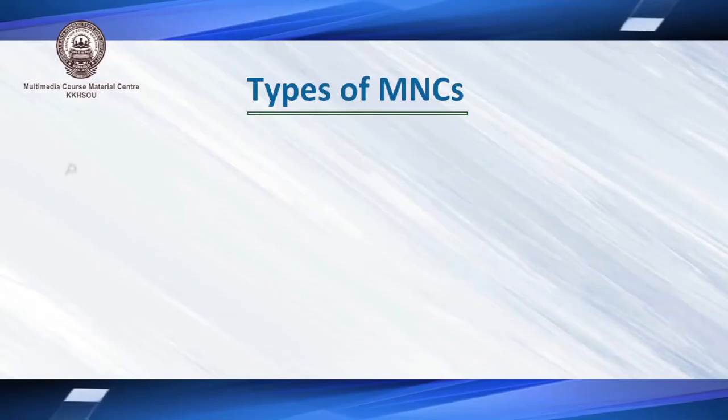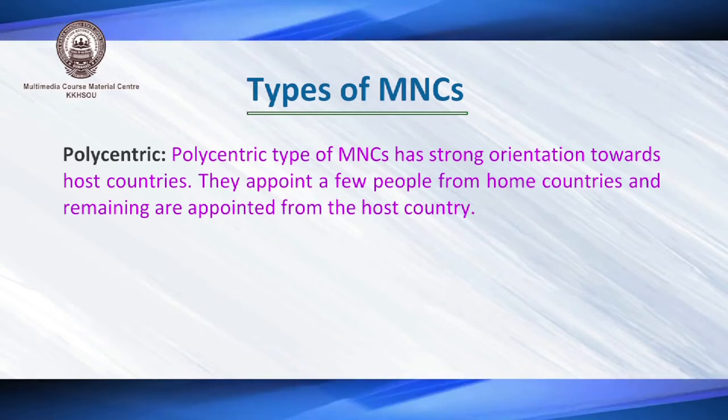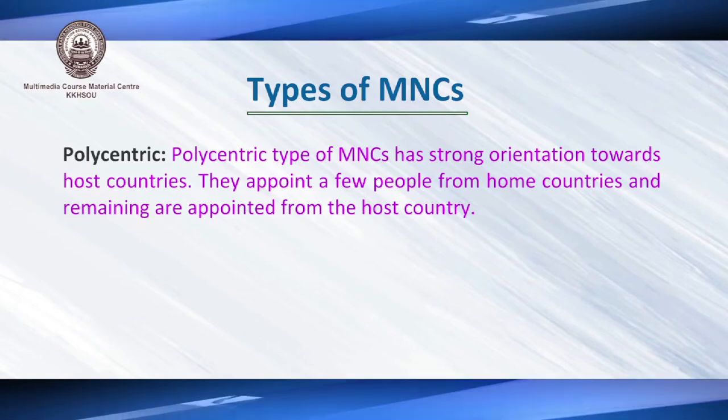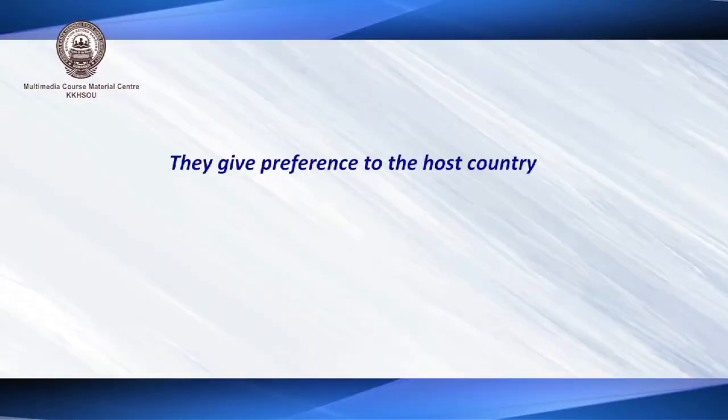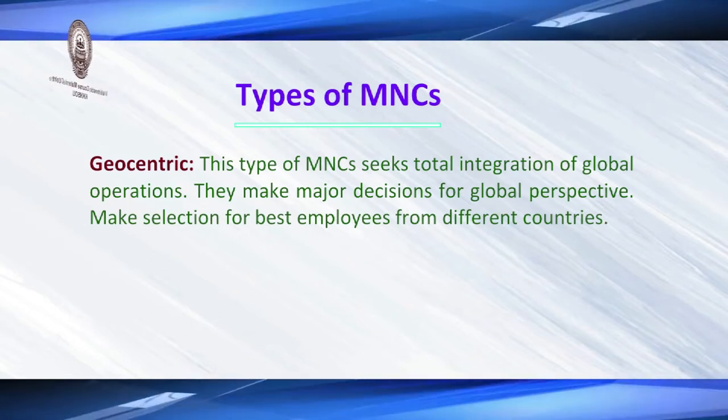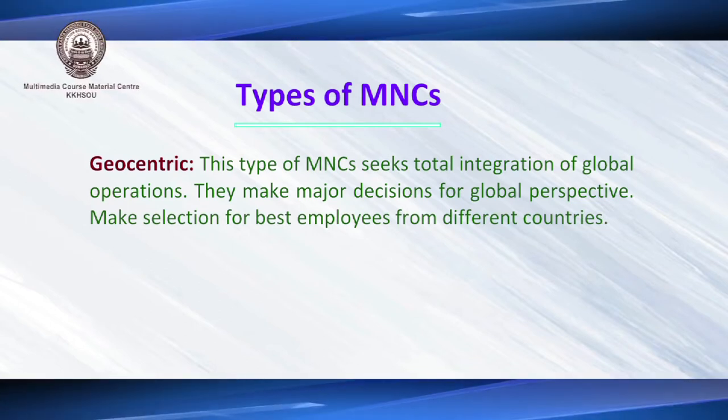Polycentric multinational corporations are just opposite to ethnocentric ones. Polycentric multinational corporations give importance to the host country — that is the country in which the MNC operates. They try to generate employment in those countries and give preference to the host country. Number three is geocentric — a geocentric multinational corporation gives importance to global operations and makes decisions on a global perspective.